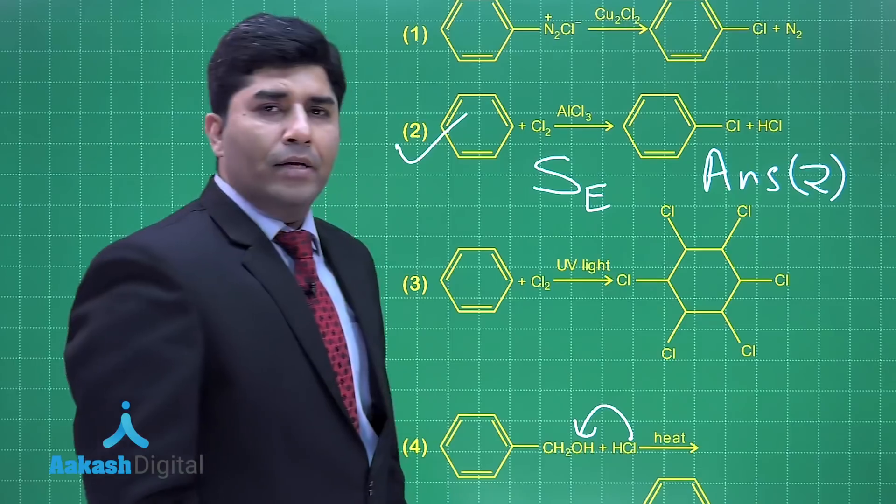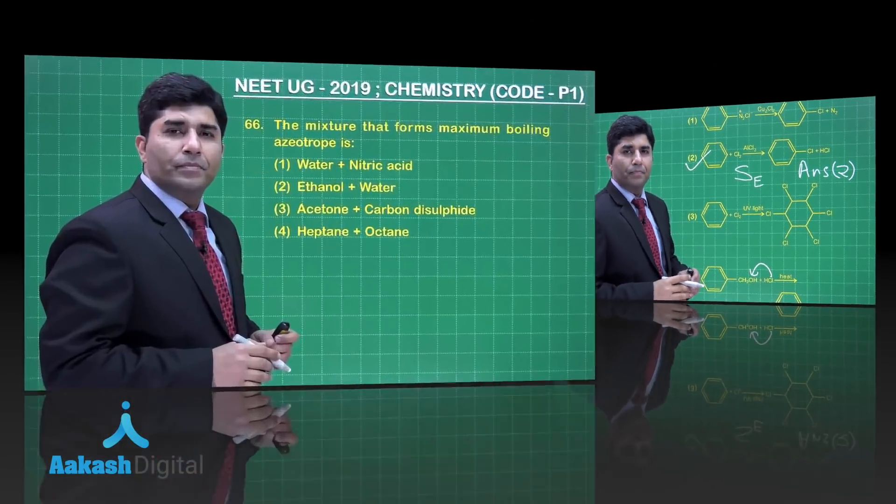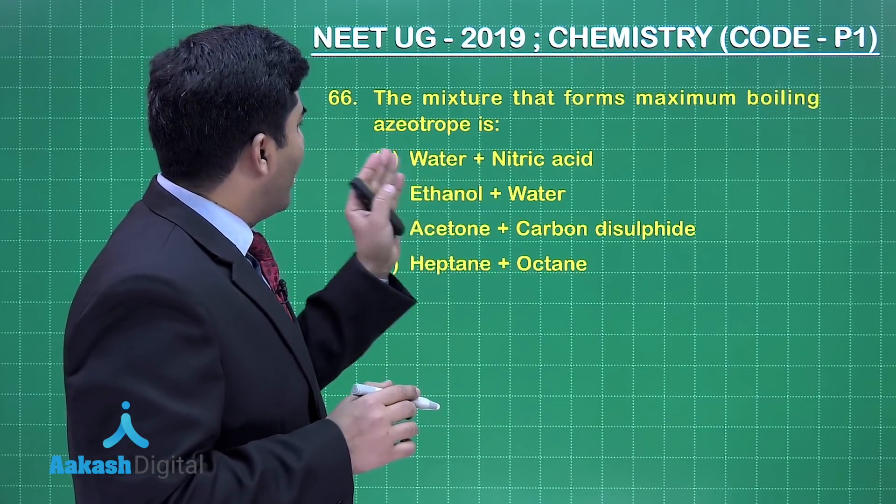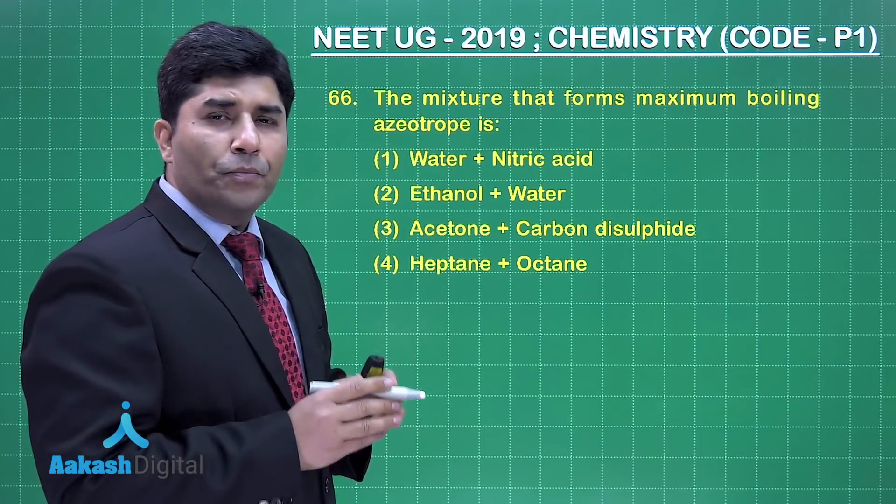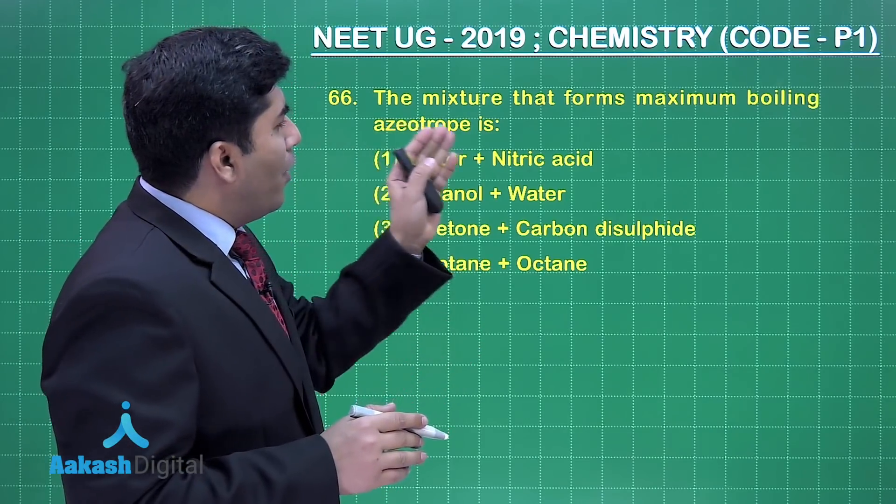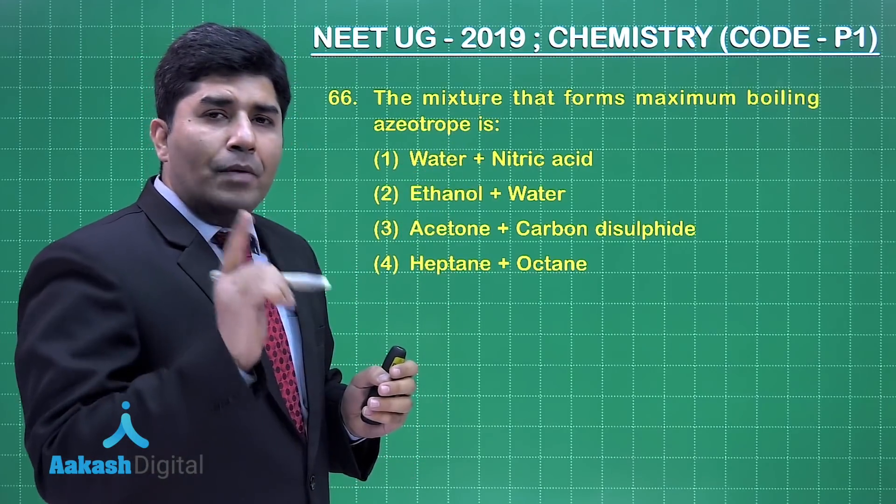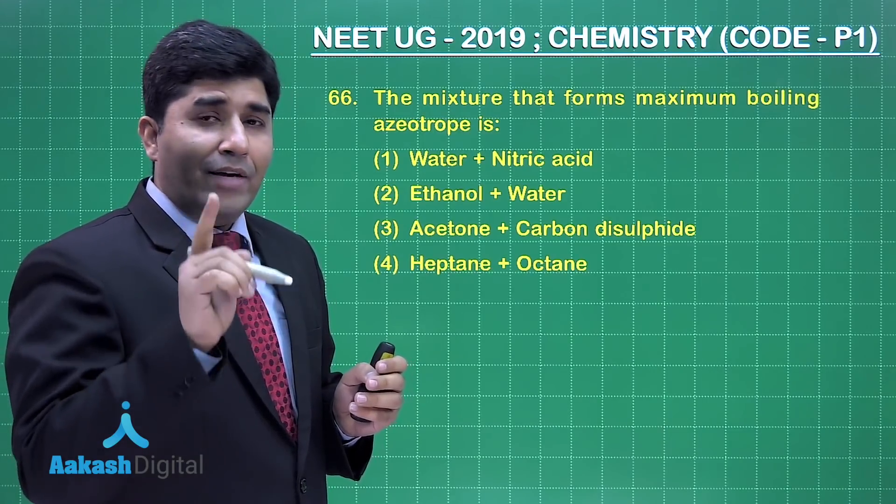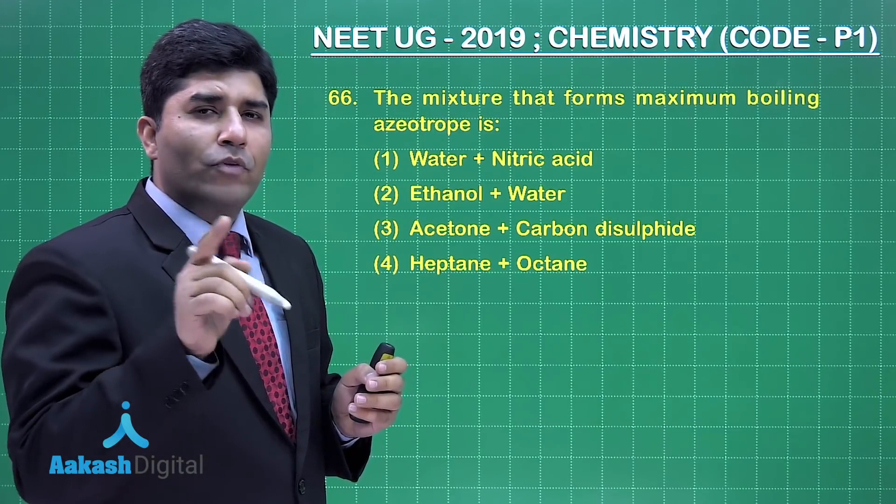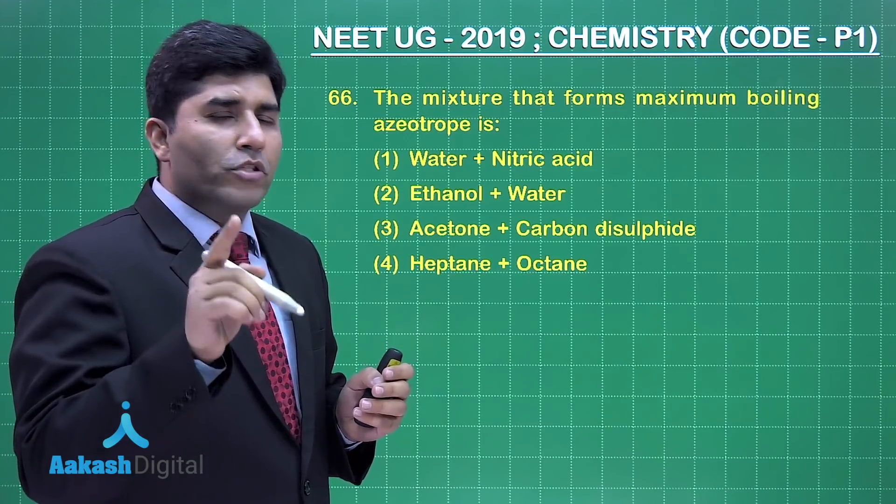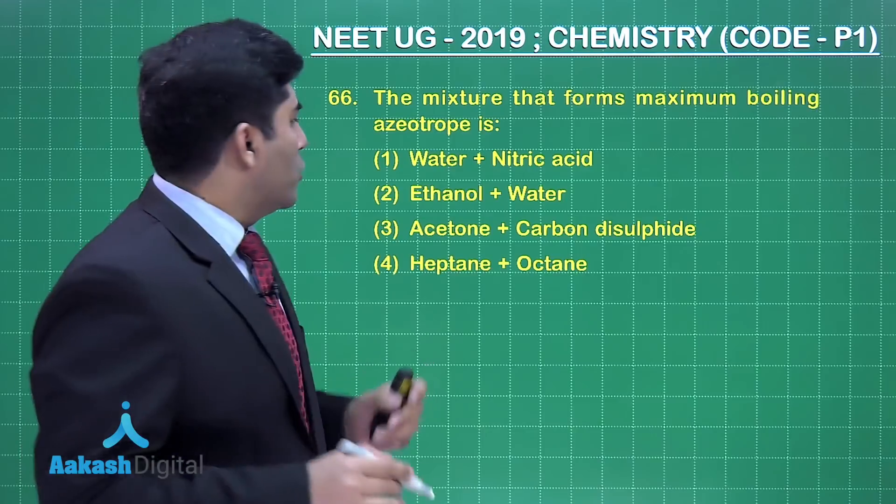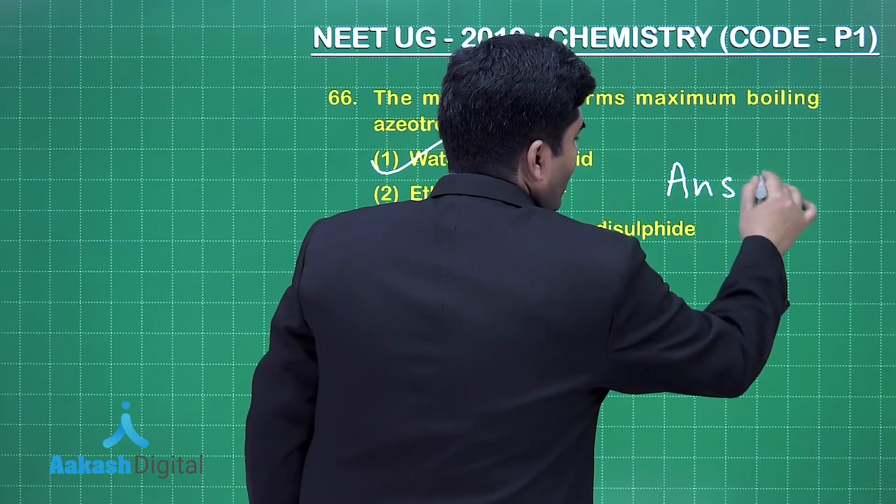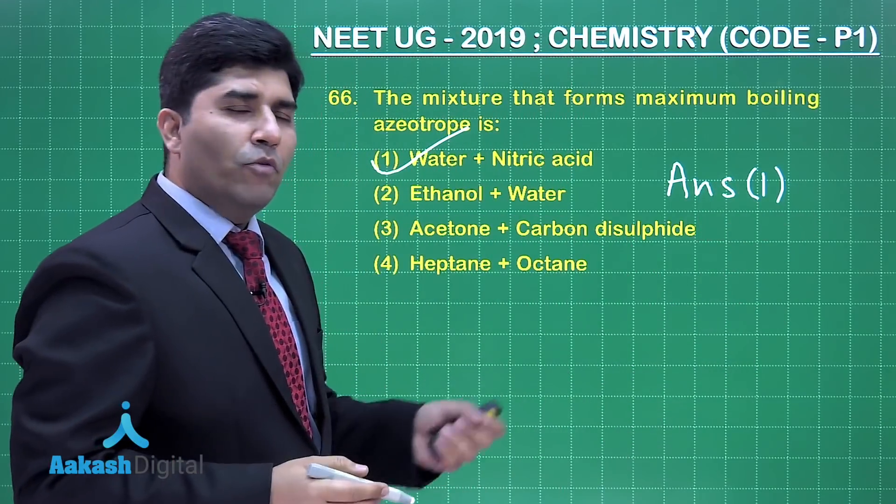Let's move on to the next question. In this question asking the mixture that forms a maximum boiling azeotrope, four options are given to you. Maximum boiling azeotrope means the boiling point of the azeotrope should be greater than that of the individual liquids. That will happen when the liquids will form the solution which shows the negative deviation from Raoult's law, that's why first is our correct answer. So the answer is option number one.